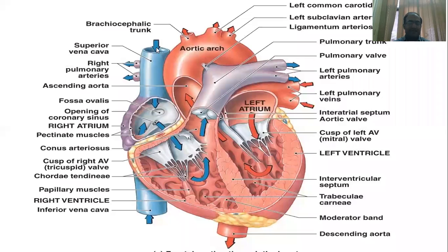This is the superior vein, known as the right and left brachiocephalic vein, but this is the upper side of the right atrium.